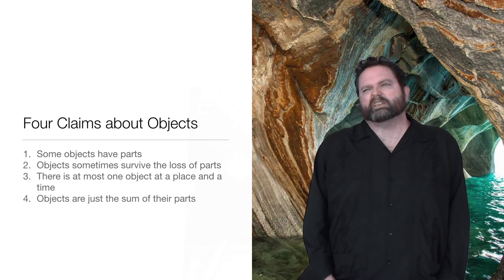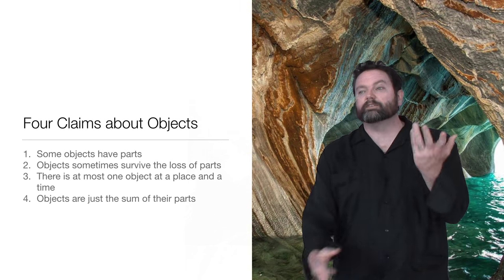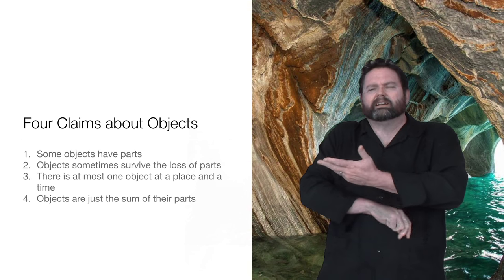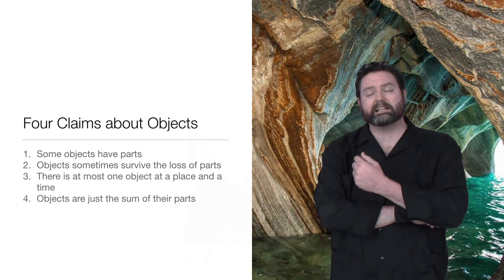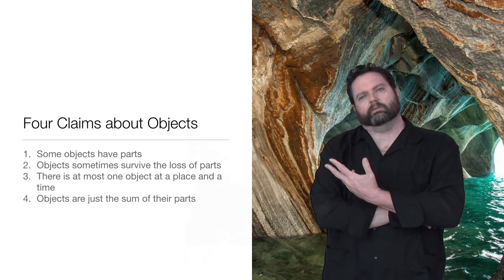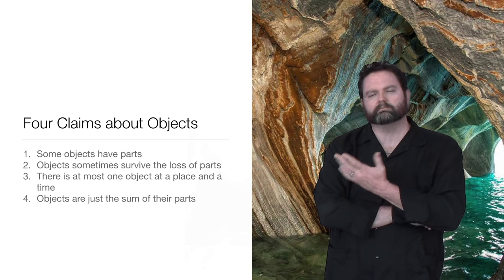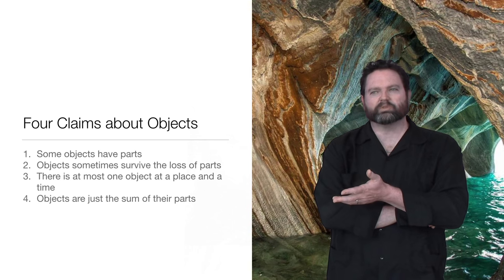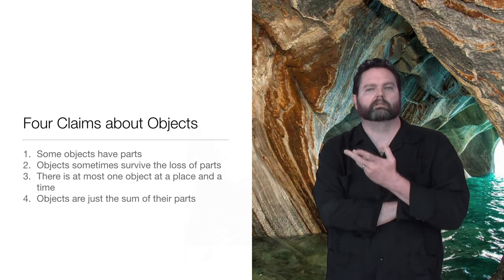So let's consider these four statements about objects. These are very commonplace statements. The first one is that at least some objects have parts. Think about your car. It's got spark plugs, tires, windshields, a steering column. There's lots and lots of parts in a car. Or even yourself. We say that we are our bodies. We have hearts, lungs, kidneys, spleen, skin, bones, eyeballs, hair, all of that have these parts.